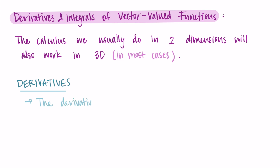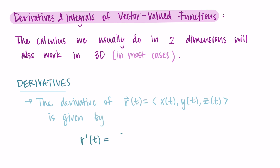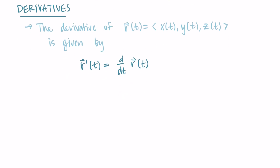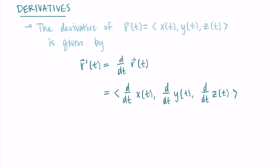Starting with derivatives: the derivative of a vector-valued function r(t) = <x(t), y(t), z(t)> is written as r'(t), or equivalently as d/dt of vector r. This is simply the derivative of each component — the derivative of the x component, the y component, and the z component — giving us x'(t), y'(t), and z'(t).